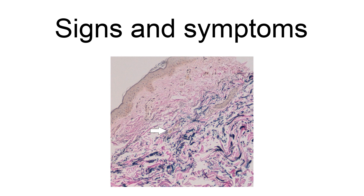PXE first affects the retina through a dimpling of Bruch's membrane, a thin membrane separating the blood vessel-rich layer from the pigmented layer of the retina, that is only visible during ophthalmologic examinations. This is called peau d'orange, a French term meaning skin of the orange. Eventually the mineralization of the elastic fibers in Bruch's membrane creates cracks called angioid streaks that radiate out from the optic nerve. Angioid streaks themselves do not cause distortion of vision, even if they cross into the foveal area. This symptom is present in almost all PXE patients and is usually noticed a few years after the onset of cutaneous lesions.